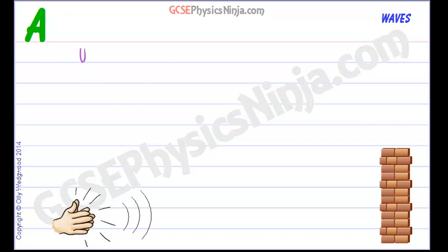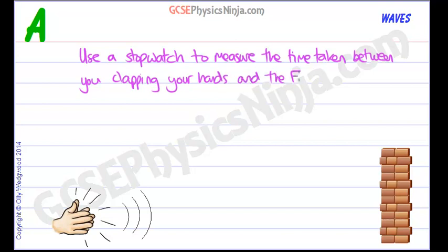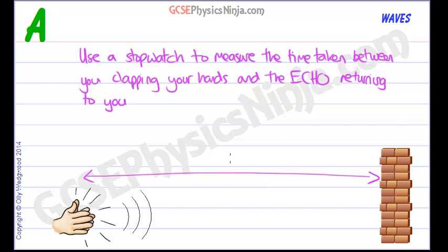You would use a stopwatch to measure the time taken between clapping your hands and the echo — that's the reflection — returning to you. So if you stood a hundred metres away from the wall of a building and clapped, the sound waves would travel towards the wall, reflect, and come back again.